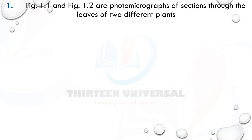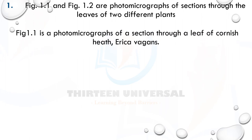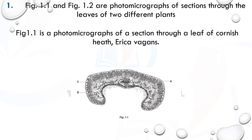Let's look at the first question. Fig 1.1 and fig 1.2 are photomicrographs of sections through the leaves of two different plants. Fig 1.1 is a photomicrograph of a section through a leaf of Cornish heath — Erica vagans.